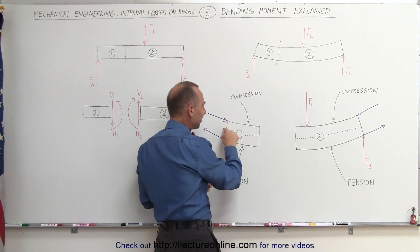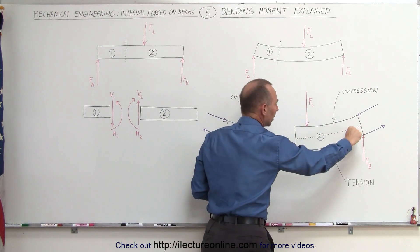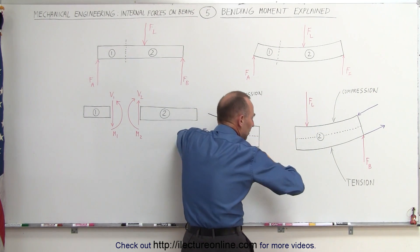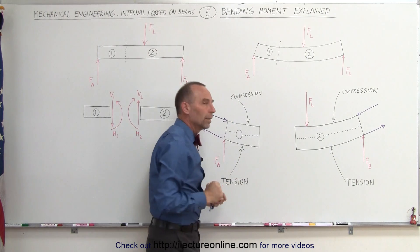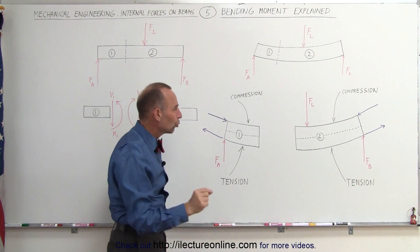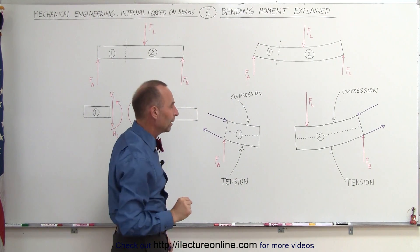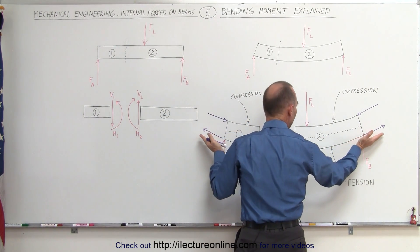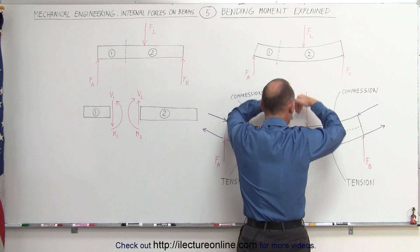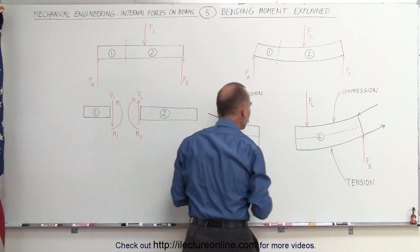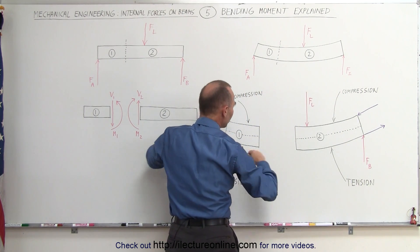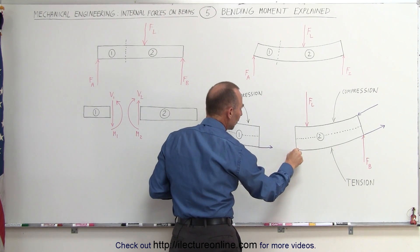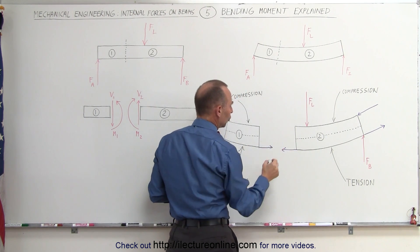In other words, the center of the beam will remain roughly the same, but the top of the beam gets pushed together and the bottom gets stretched out. Those forces cause internal moments in the beam. Notice, as the forces of tension pull the beam apart in this direction because of the load force pushing down on the beam, we have a force pulling in this direction at the bottom of section one and in this direction at the bottom of section two.